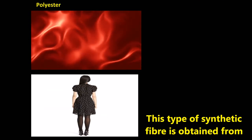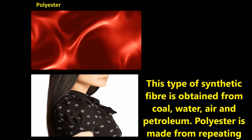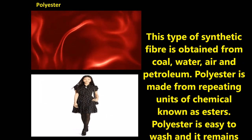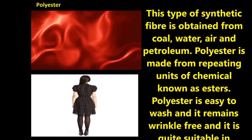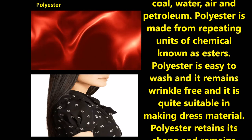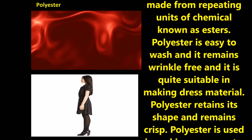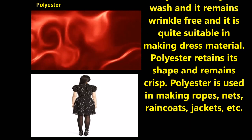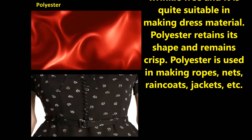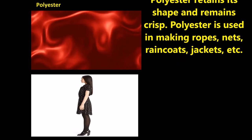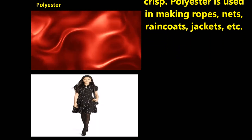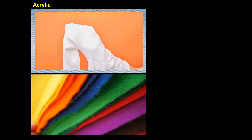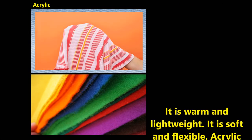Polyester is a synthetic fiber obtained from coal, water, air, and petrol. It is made from repeating units of chemicals known as esters. Polyester is easy to wash, remains wrinkle-free, and is quite suitable for making dress material. It retains its shape. Polyester is used in making ropes, nets, rain coats, jackets, etc.